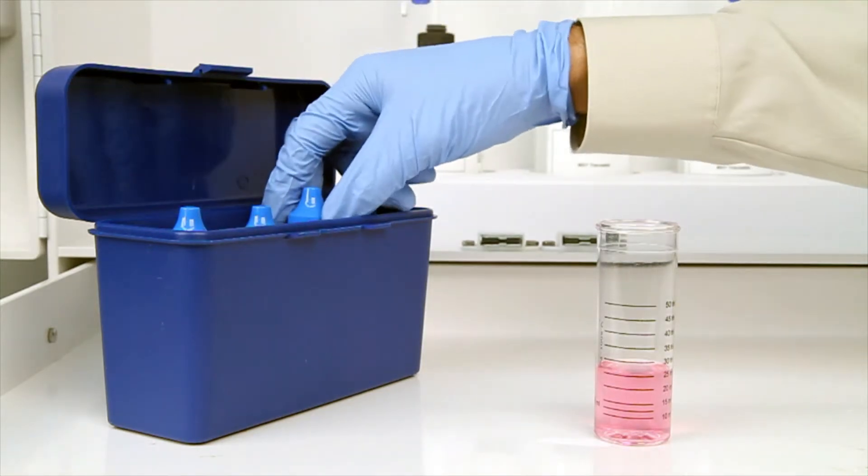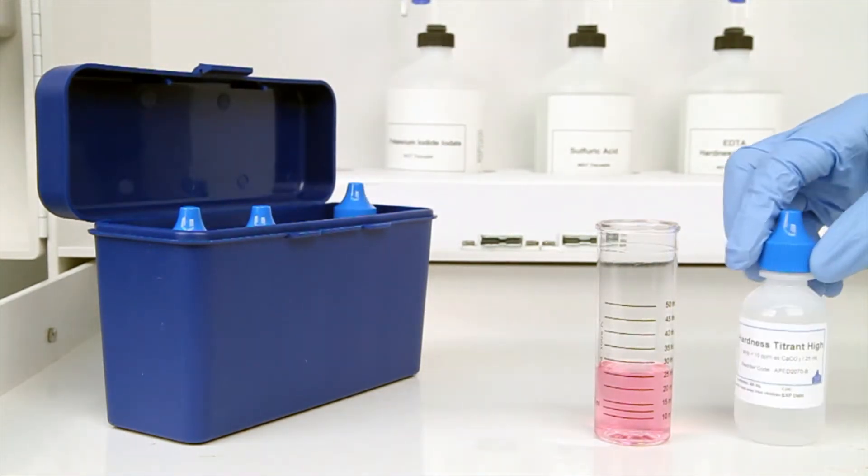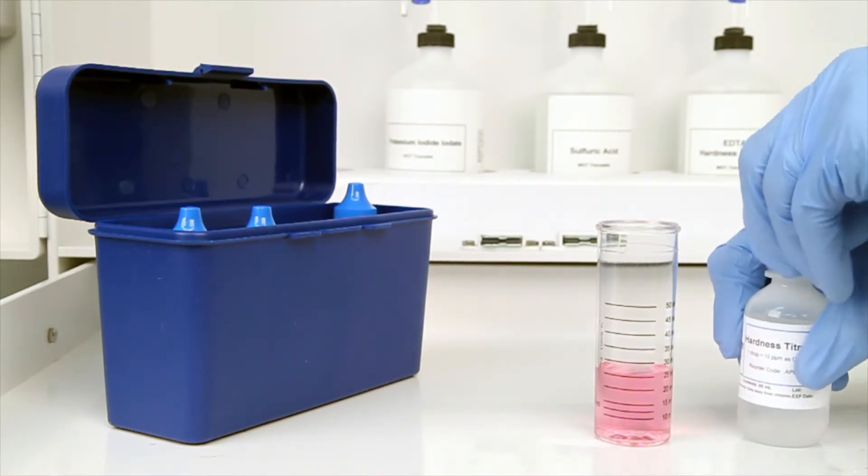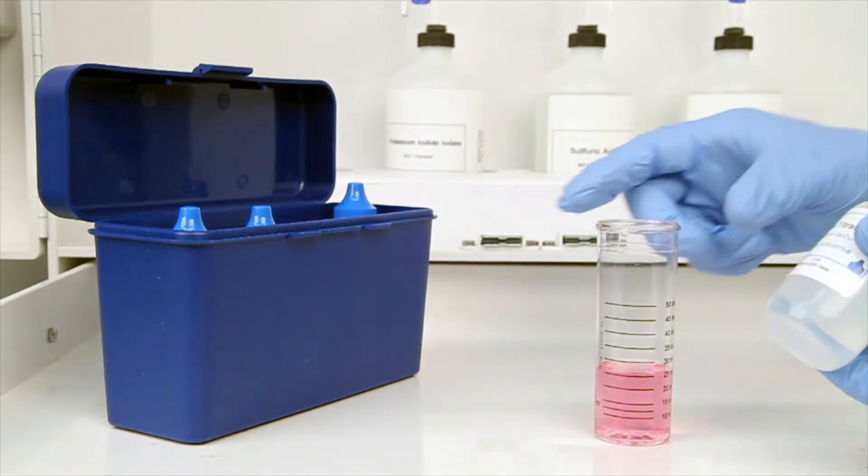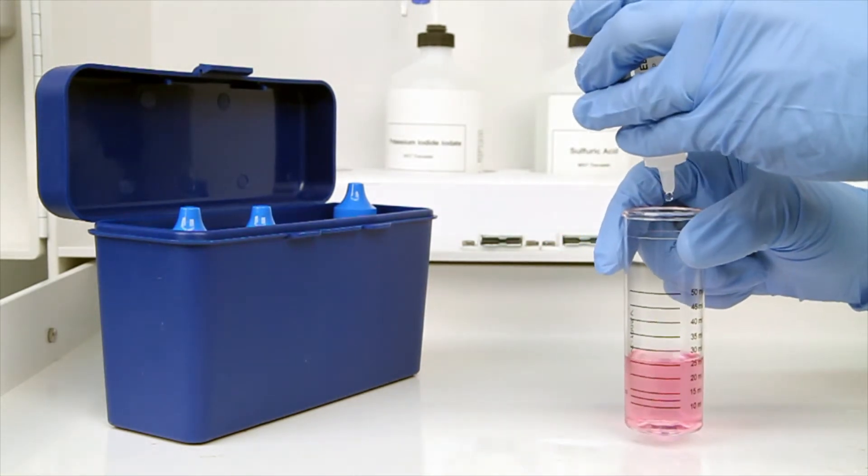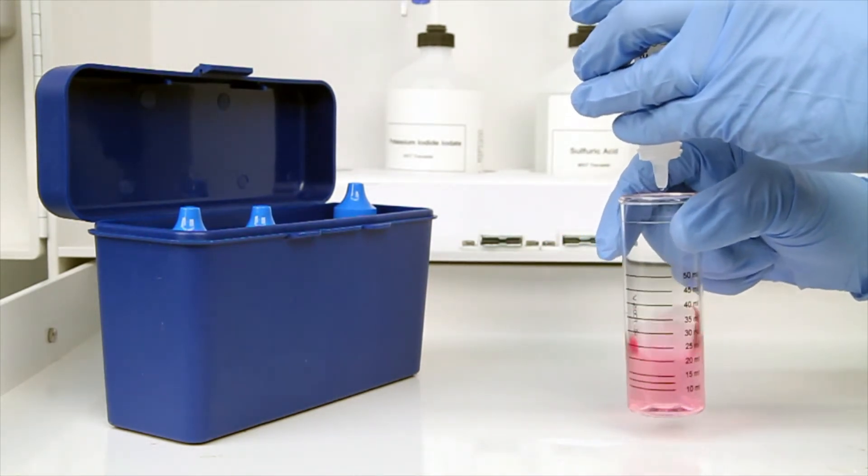The next step according to the Endpoint ID procedure is to perform the titration. Each bottle of titrant is labeled with the equivalency and sample size it was manufactured for. It's important to make sure you have the proper titrant and the proper sample size for this titration.